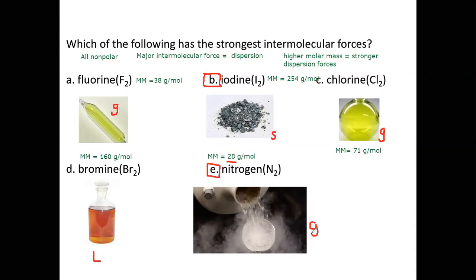At room temperature nitrogen is a gas. If you ever get the chance to handle liquid nitrogen, it's actually pretty cool — when it drops on your fingers it's kind of a silky feeling; it evaporates as soon as it touches your skin. So if we ask, based on physical states, which one would have the strongest intermolecular forces, it would again be iodine, because iodine is a solid at room temperature while the others are gases or liquid. A solid has stronger intermolecular forces than a gas.